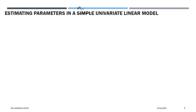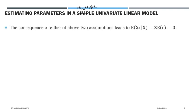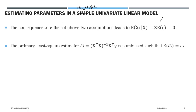Coming to estimating parameters in the multiple univariate linear model: we had already seen the assumption of error. The expectation of error is always zero — overall error has zero mean. The error is always independent of the input variable or attribute. Through those assumptions, we derived the estimate of the parameter omega.